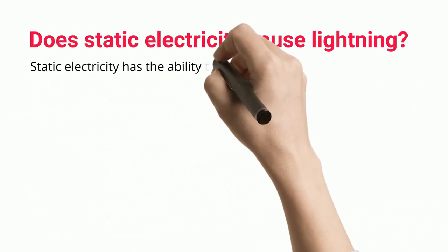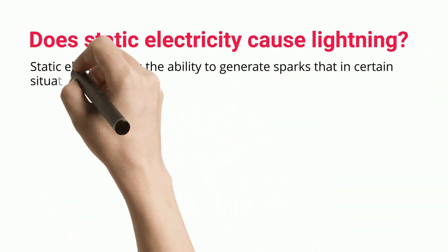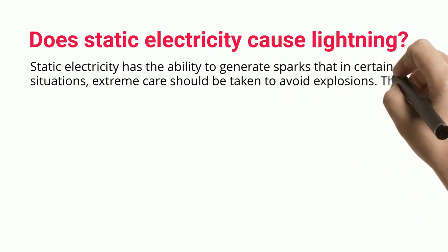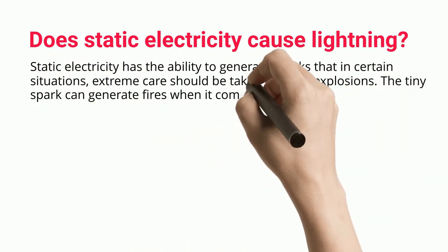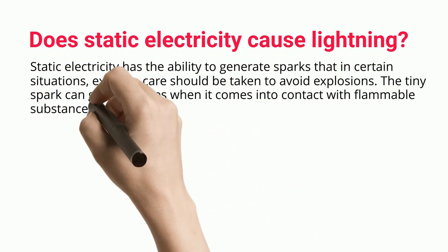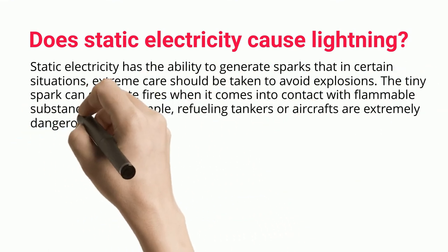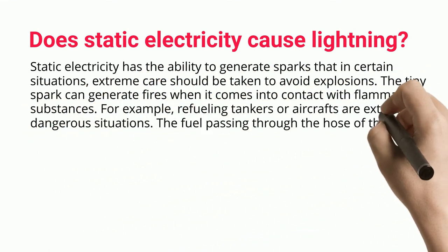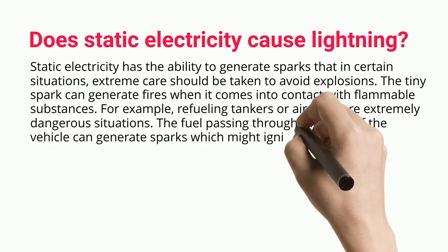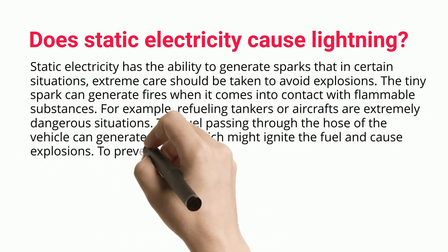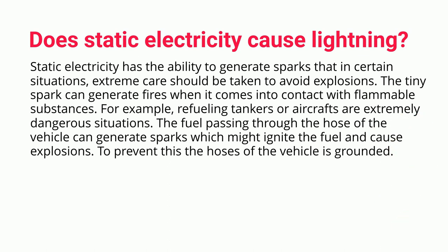Static electricity has the ability to generate sparks, and in certain situations extreme care should be taken to avoid explosions. The tiny spark can generate fires when it comes into contact with flammable substances — for example, refueling tankers or aircraft are extremely dangerous situations. The fuel passing through the hose of the vehicle can generate sparks which might ignite the fuel and cause explosions. To prevent this, the hoses of the vehicle are grounded.